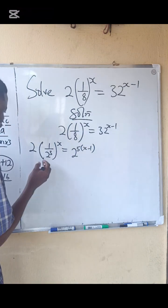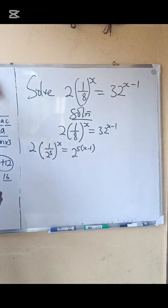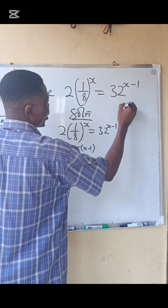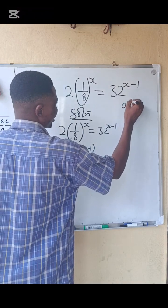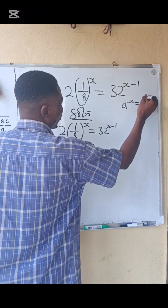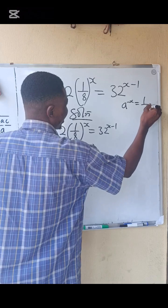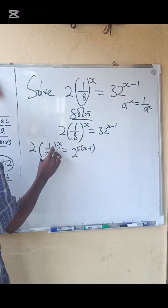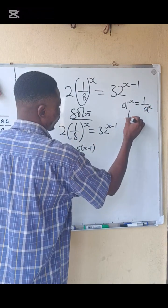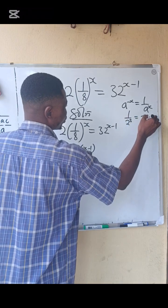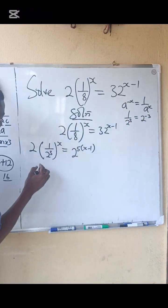From the negative index law of indices, if you have a power minus x, the answer can be written as 1 over a power x. So I'm going to apply the same thing here. This is to say that 1 over 2 power 3 equals to 2 raised to power minus 3.